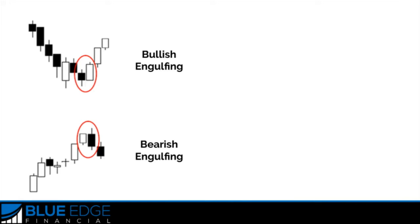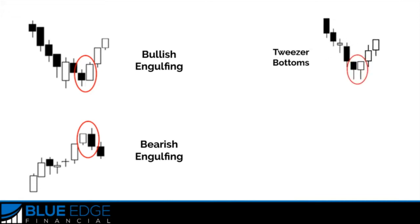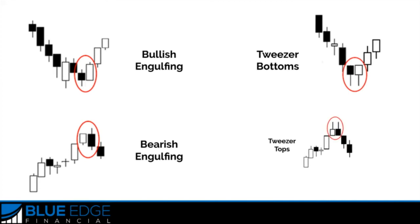The bearish engulfing pattern occurs when a bullish candle is immediately followed by a bearish candle that completely engulfs it. This means that sellers overpowered the buyers and that a strong down move could happen. The second two dual candlestick patterns are called tweezer bottoms and tweezer tops.